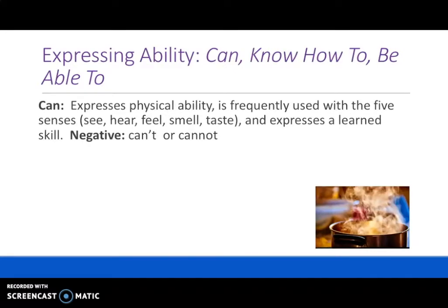Let's look at expressing ability. We can use can, know how to, and be able to. Can expresses physical ability and is frequently used with the five senses: see, hear, feel, smell, taste. It also expresses a learned skill. The negative is can't or cannot — spelled as one word. For example: I can smell dinner cooking.